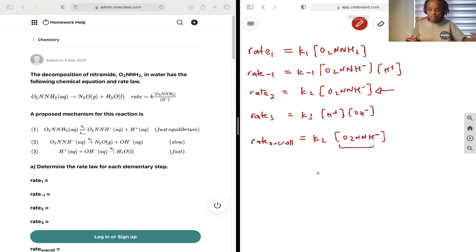We can't measure it during the reaction, and we need to put down things that we can measure, and so what we're going to do is we are going to use this in order to write it in terms of species that are in our overall chemical equation.